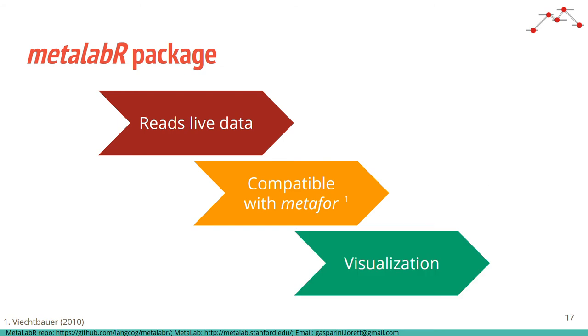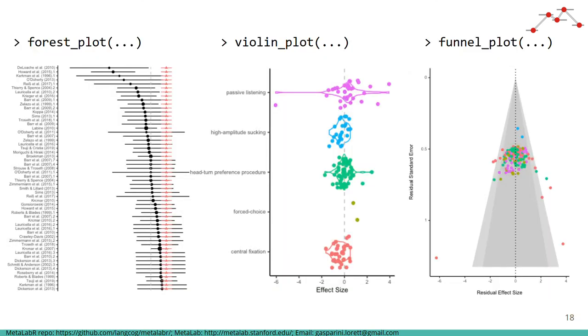And finally, the MetaLabR package contains various functions for visualizing effect sizes, such as a forest plot, violin plot, and funnel plot. These build on the ggplot package, but provide by default an APA theme and selected colors, as you can see here in these plots. This makes the process of plotting quick and easy and gives the MetaLab plots a standardized look and feel.